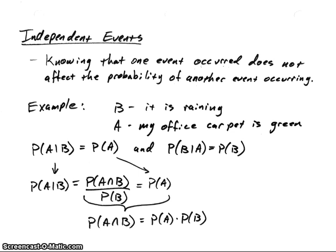I gave a kind of silly example here, but it kind of proves the point. Suppose we have event B, and that event is: it is raining outside. And this other event, A, is: my office carpet is green. It's kind of a blue-green, but we're just looking at probabilities here.